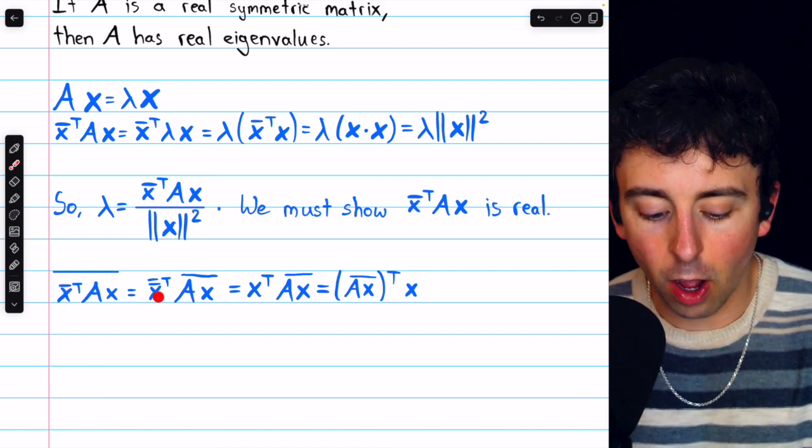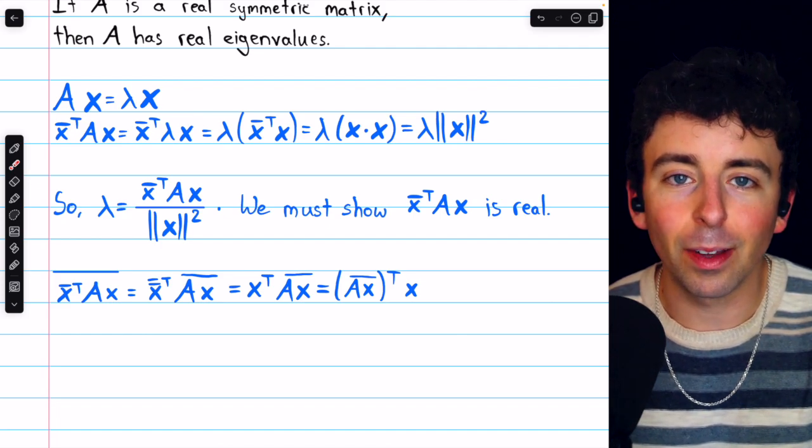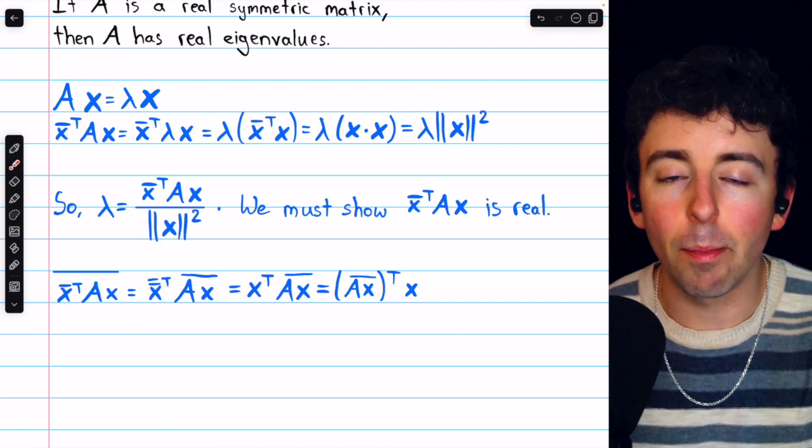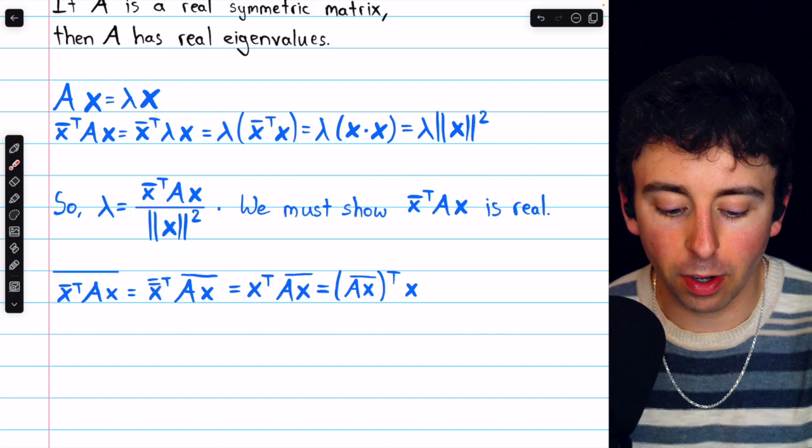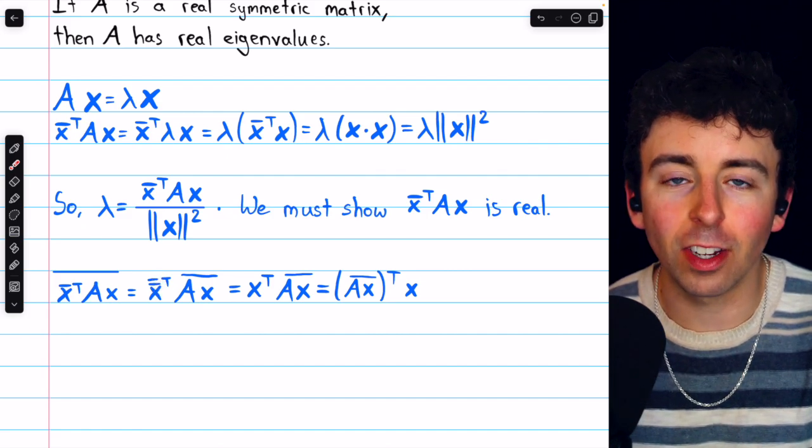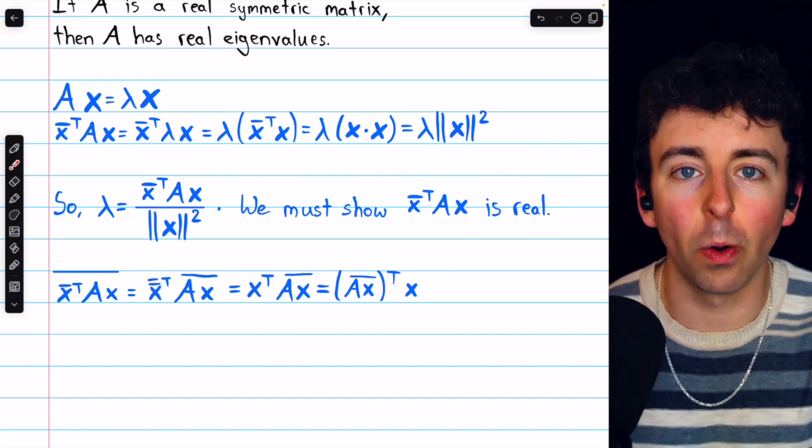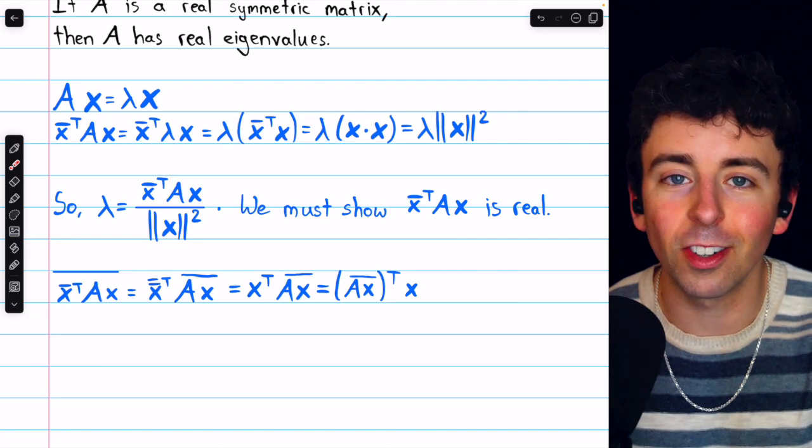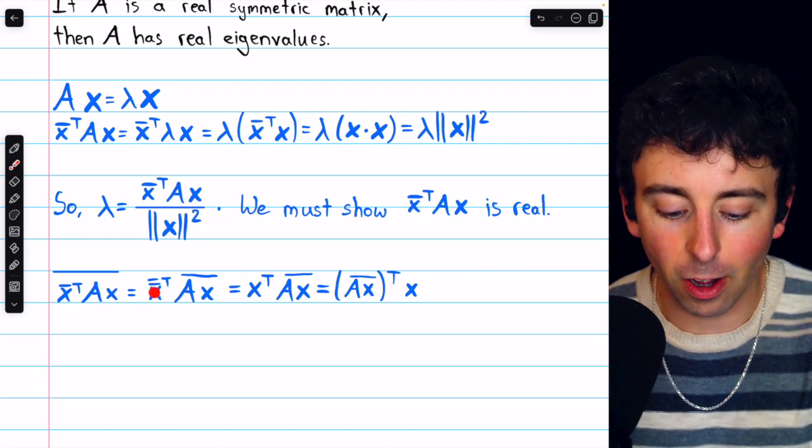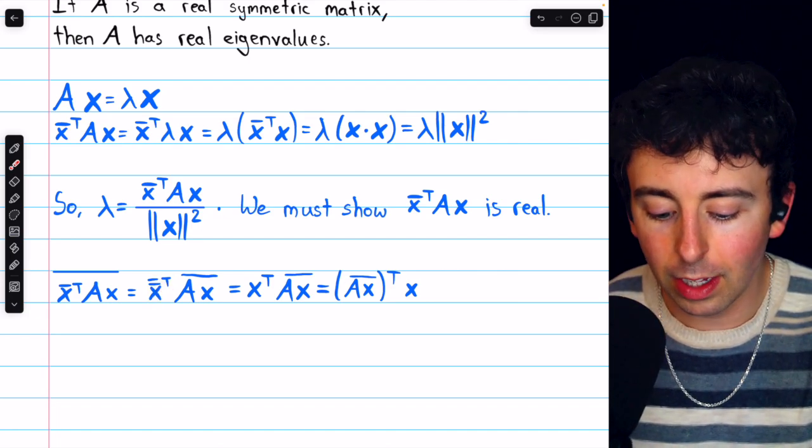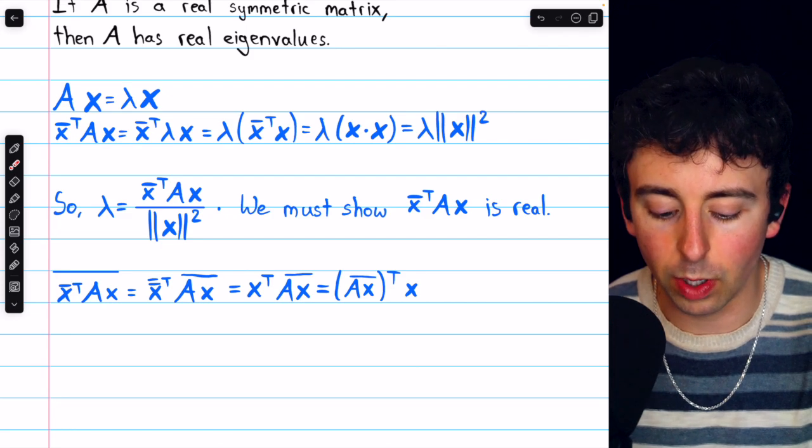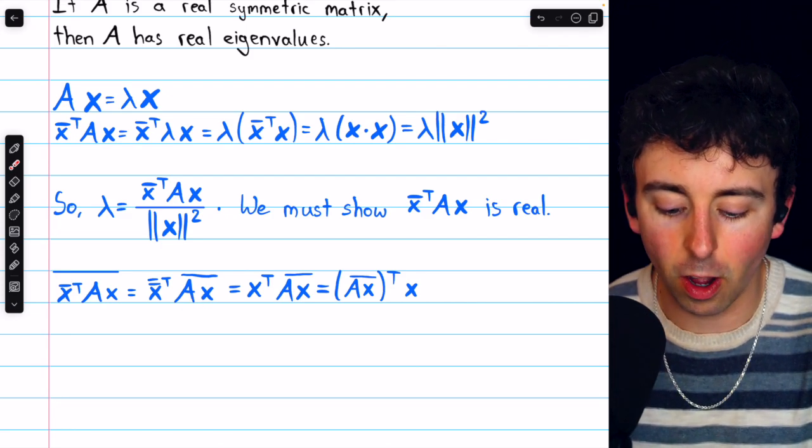Now the conjugate of x transpose conjugate, that would mean that we just negate any imaginary components. That's what the first conjugate does. But then the second conjugate would negate them again. So in total, nothing has changed at all, the two conjugates cancel out. So x conjugate transpose conjugate is just x transpose. We of course still have that Ax conjugate.